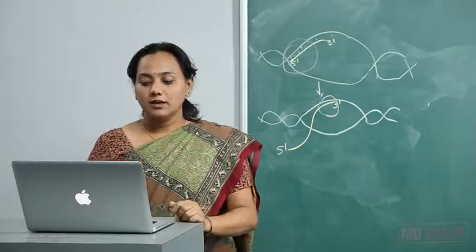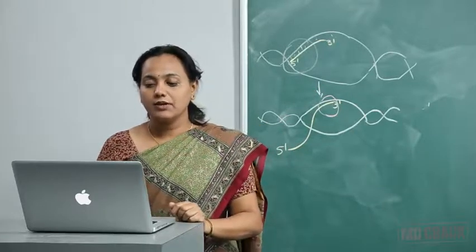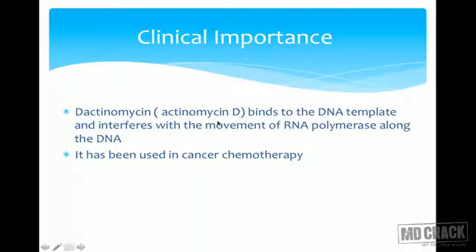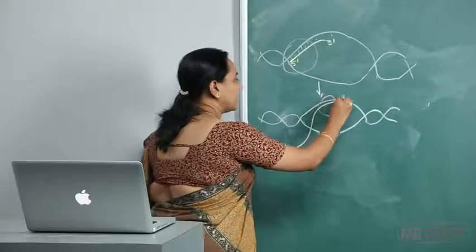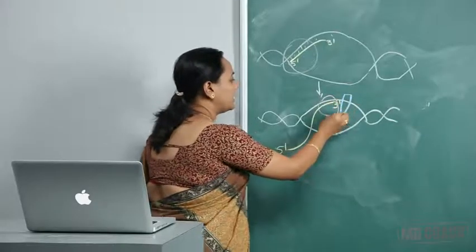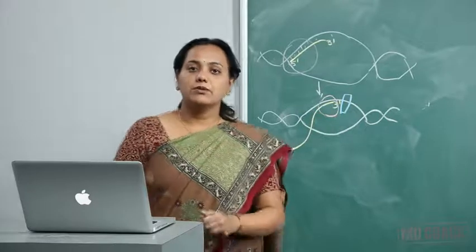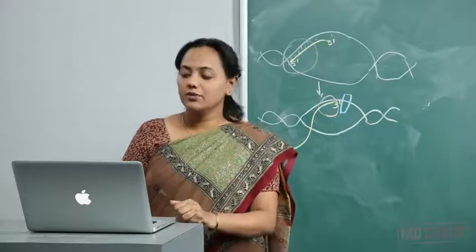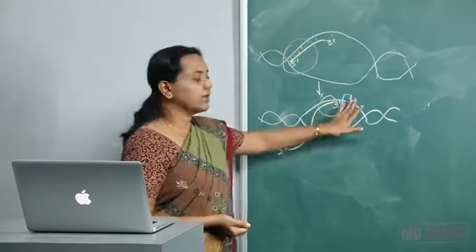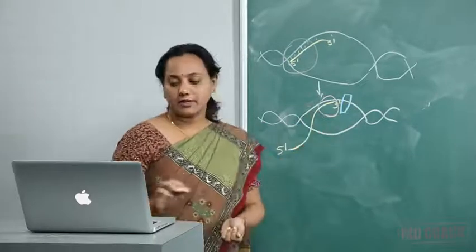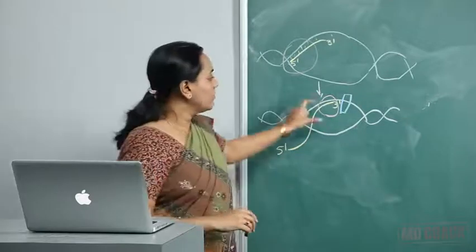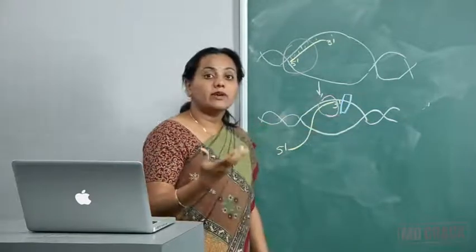A drug known as dactinomycin, also called actinomycin D, binds to the DNA template and interferes with the movement of RNA polymerase along the DNA. If actinomycin D is present, it prevents the RNA polymerase from moving. This drug has been used in cancer chemotherapy. Its main function is to inhibit the movement of RNA polymerase.